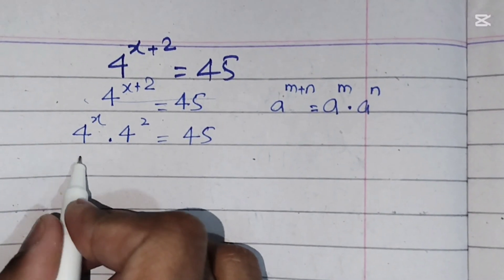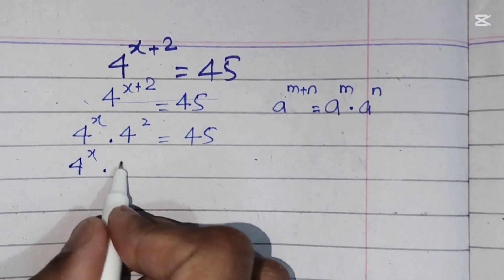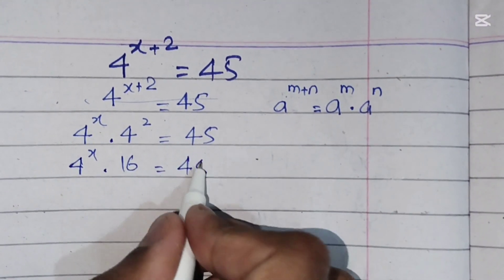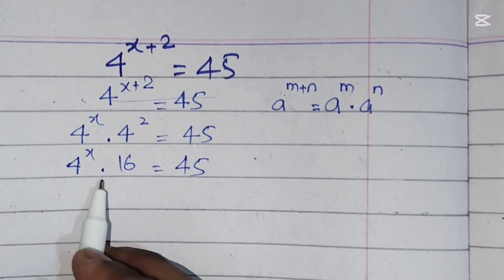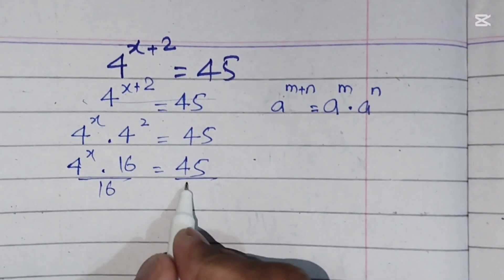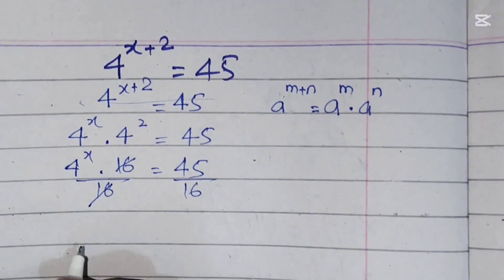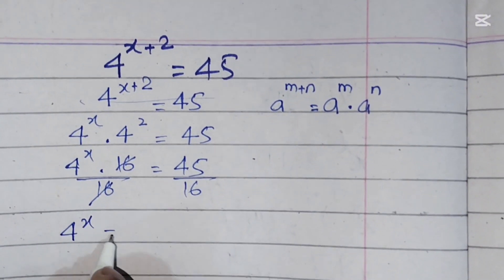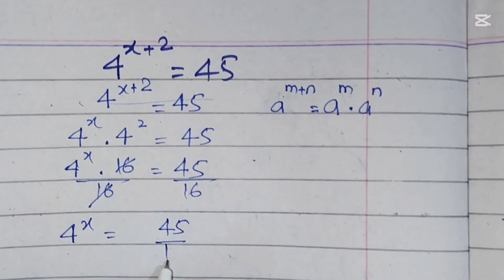Now we can write 4 squared as 16, so it becomes 4 power x times 16 equals 45. We will divide both sides by 16. The 16 cancels with 16, giving us 4 power x equals 45 over 16.